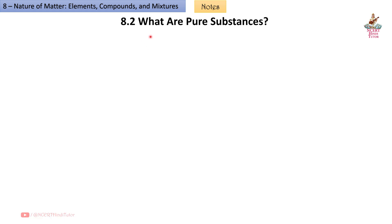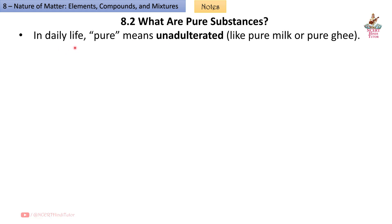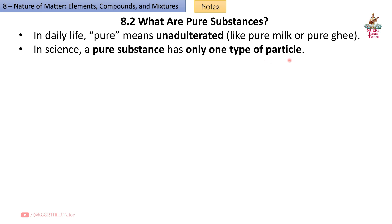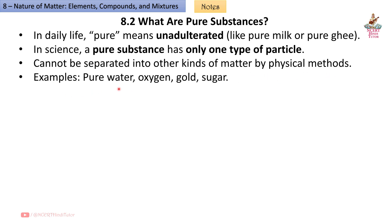8.2 What are Pure Substances? In daily life, 'pure' means unadulterated, like pure milk or pure ghee. In science, a pure substance has only one type of particle and cannot be separated into other kinds of matter by physical methods, e.g. Pure Water, Oxygen, Gold, Sugar.